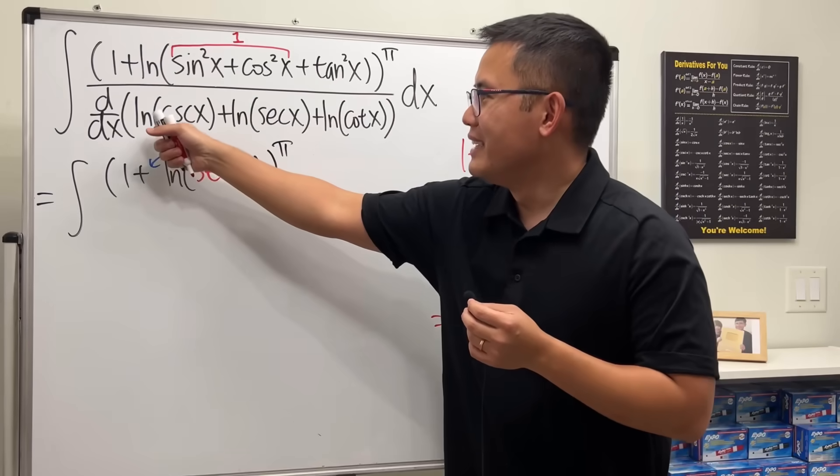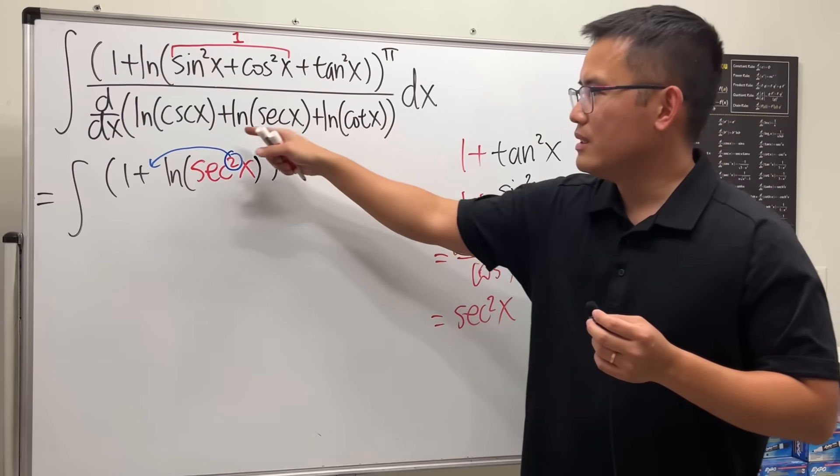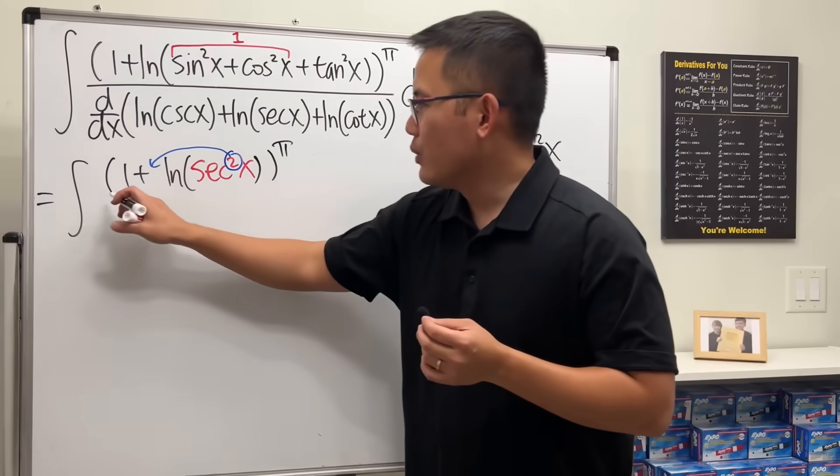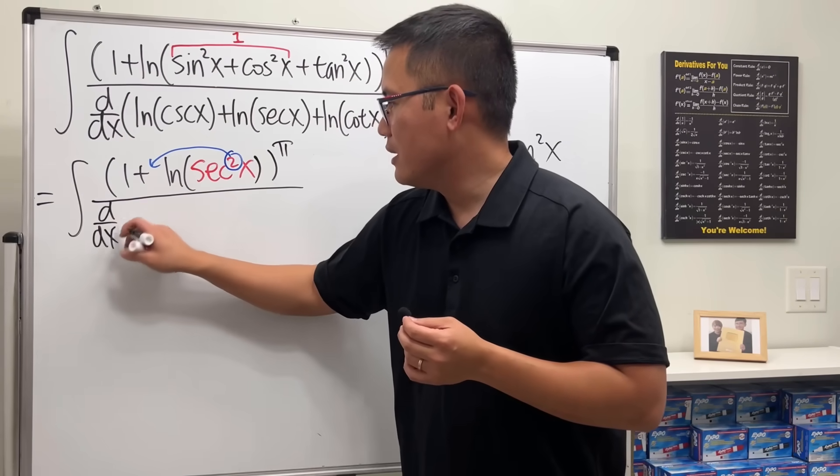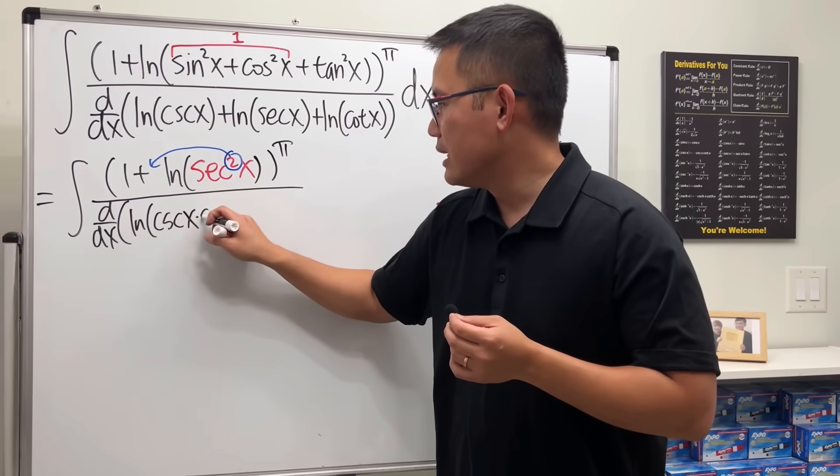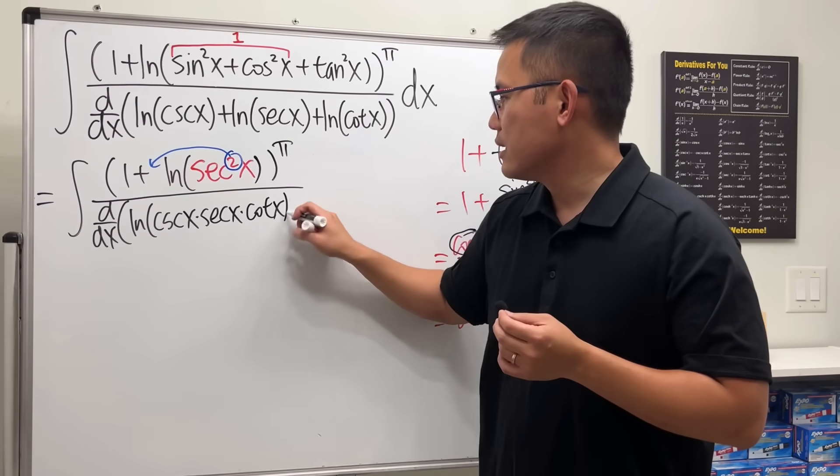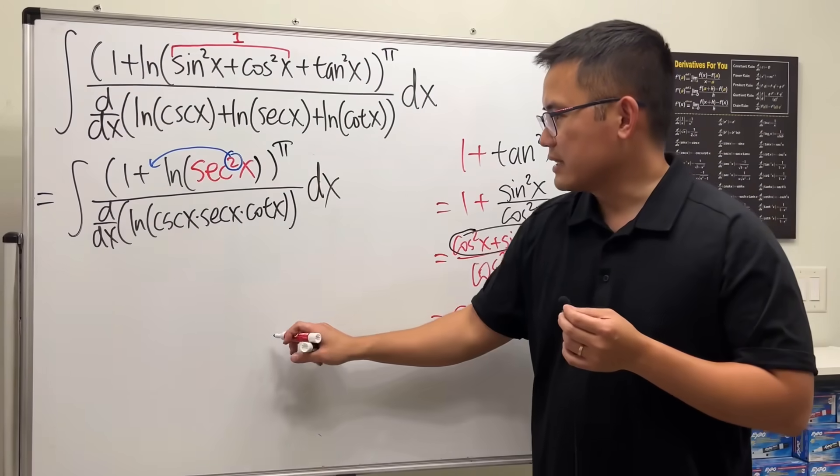Check this out. ln of cosecant plus ln of secant plus ln of cotangent, plus plus, we can just what? Multiply it inside. So, we can just put them together as taking the derivative of ln of cosecant x times secant x times cotangent x. And what's this, though? Well, let's just work this out on the side.